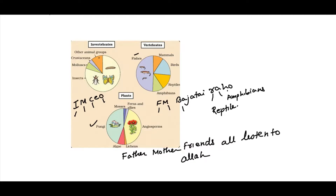For the plant groups, use the mnemonic: F for Fungi, M for Mosses, Friends for Ferns, All for Angiosperms, Listen for Lichens, Allah for Algae. These three mnemonics help you remember all three group charts.